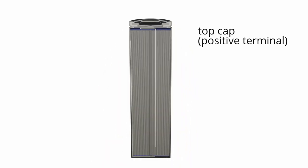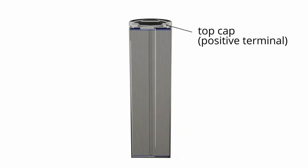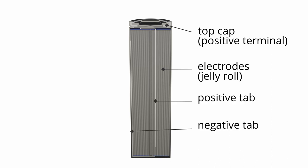To understand better how the CID works, we have to take a closer look at the internal construction of a cylindrical lithium-ion cell. The CID is located in the top cap of the cell. The electrodes, which are wound to a cylindrical shape, are connected to the cell can and to the positive terminal through one or more taps. The CID is located between the electrodes and the positive terminal, and can therefore cut this connection.